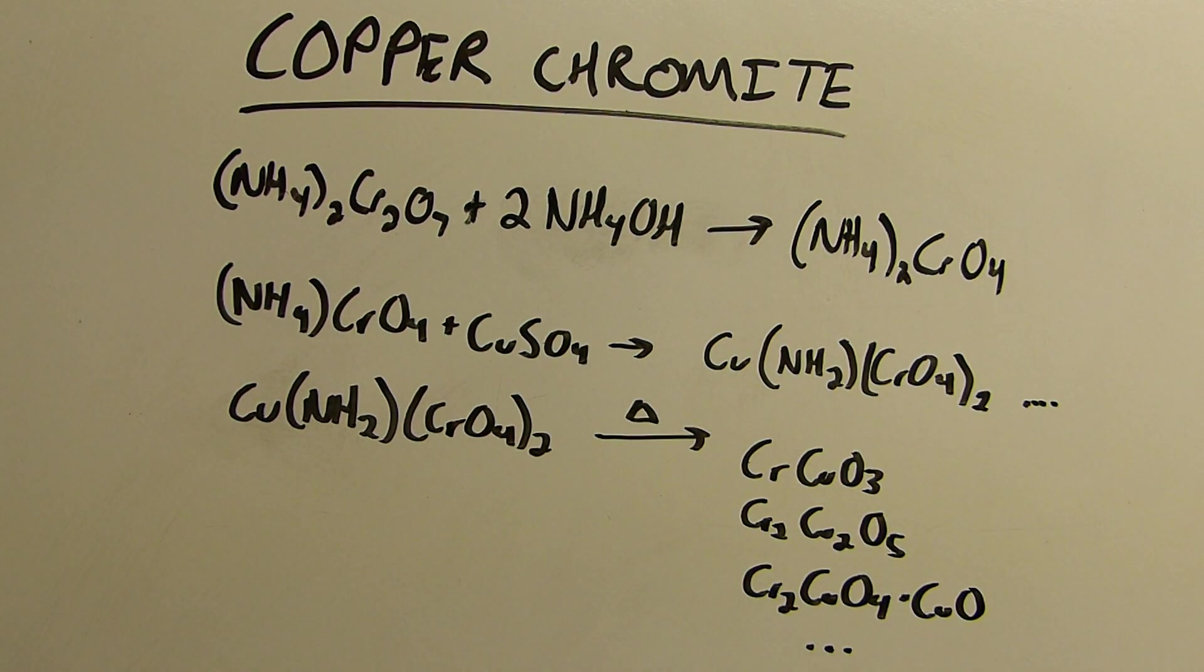Hi everyone and welcome back to the lab. In this video I'll be making copper chromite, which is useful as a decarboxylation catalyst for heterocyclic rings that have lone pairs of electrons.